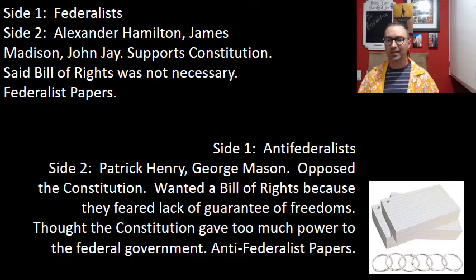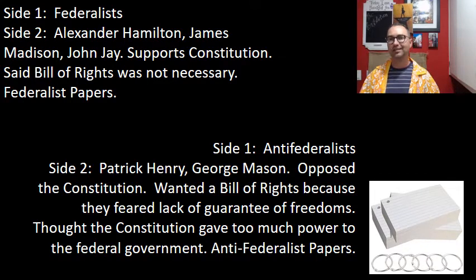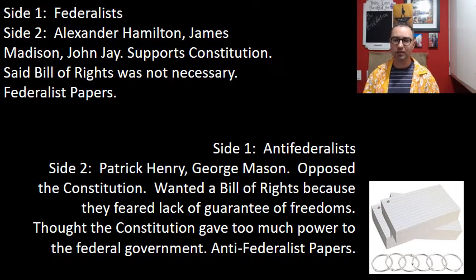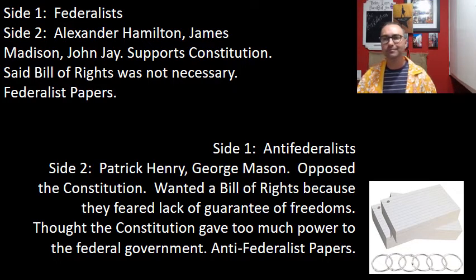Note card number two — the Anti-Federalists: Patrick Henry, George Mason, and you can put Sam Adams if you'd like. They opposed the Constitution. They wanted a Bill of Rights because they feared a lack of guarantee of freedoms. The Federalists were against the Bill of Rights — they said we don't need that, it's just going to make things worse. The Anti-Federalists thought the Constitution gave too much power to the federal government, and they wrote the Anti-Federalist Papers.